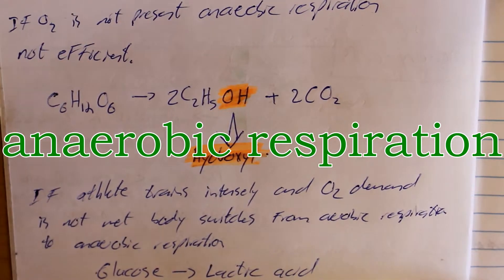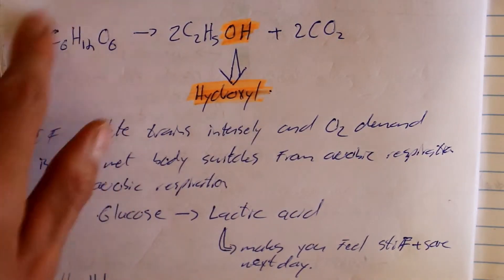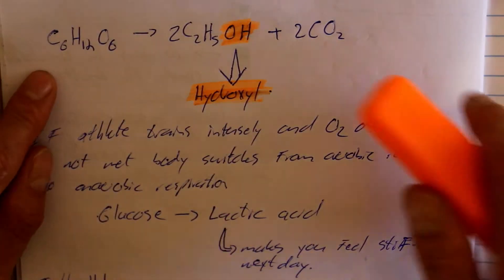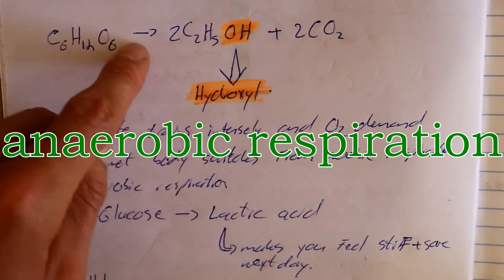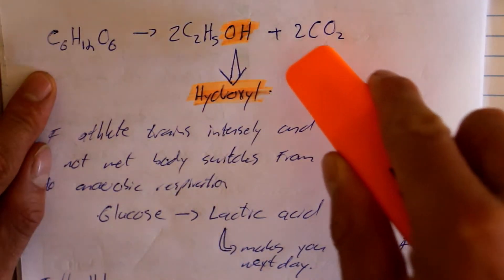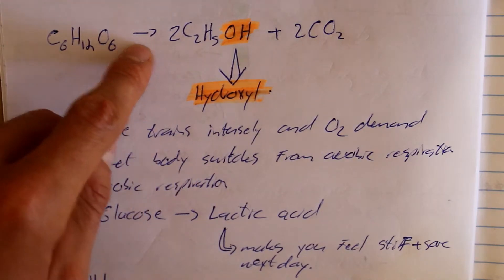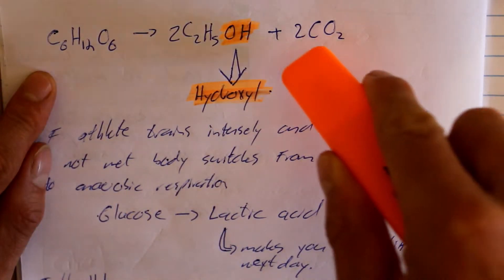If oxygen is not present, anaerobic respiration occurs. Here, glucose is converted to an alcohol product as well as carbon dioxide, and this is not as efficient. Anaerobic respiration occurs in the absence of oxygen and produces an alcohol. A quick tip: if you want to identify an alcohol, look out for the hydroxyl group — the OH.